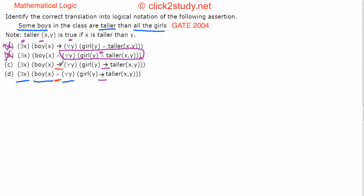The reason is the classical issue with implication: 'P implies Q' is true even when P is false. So even if X is not a boy — say X is a buffalo — and that buffalo is taller than all the girls, the implication 'boy(X) implies ...' would still be true even when X is not a boy. That's the problem with implication. That's why with the existential quantifier you always use AND, which makes option D correct.